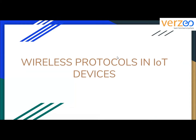Our topic for today is the wireless protocols in IoT devices. We already studied the different steps in which IoT devices work — they are installed, they perform connectivity by sharing data with other IoT devices, they perform analysis, and then they do the action part. Now we will see how different IoT devices are connected and what protocols are used. We will be studying Wi-Fi, Bluetooth, Zigbee, and MQTT. Let's start with Wi-Fi.